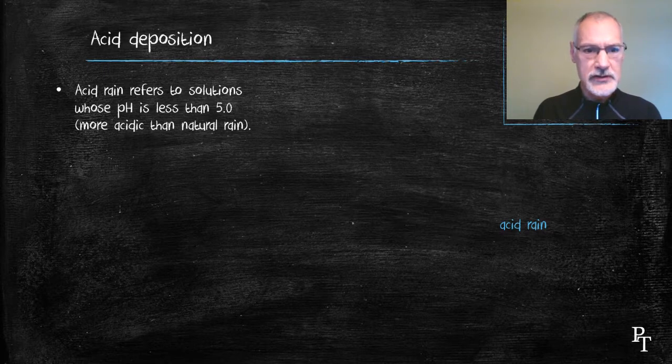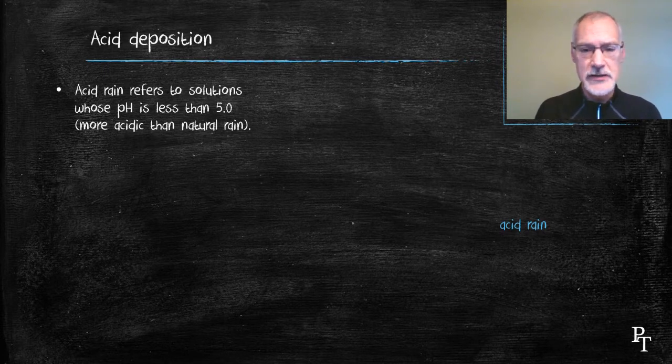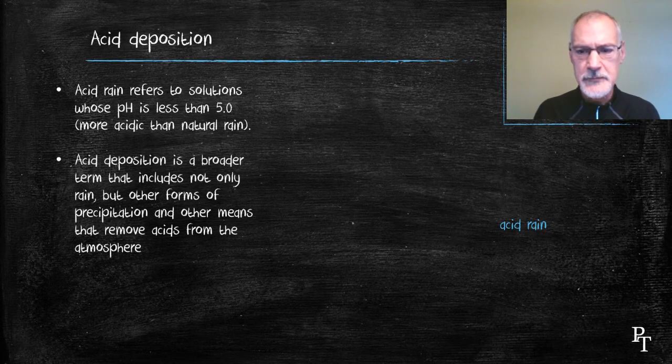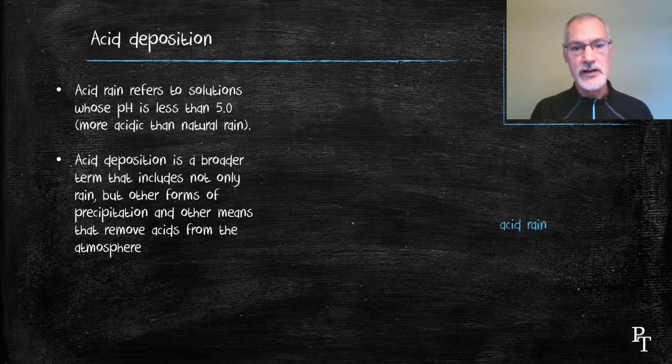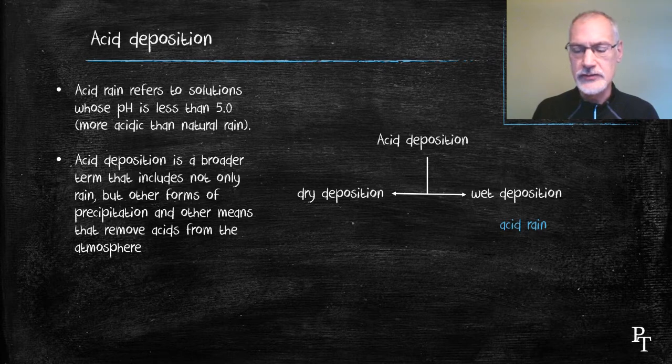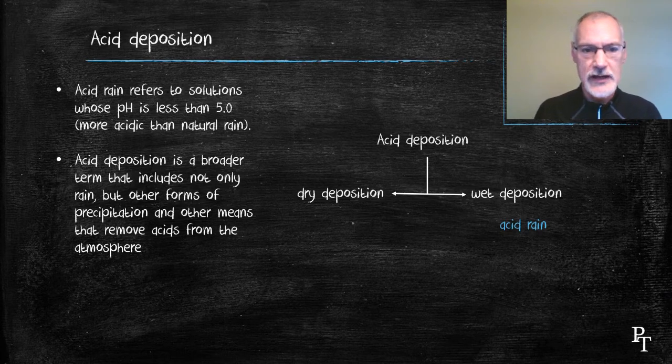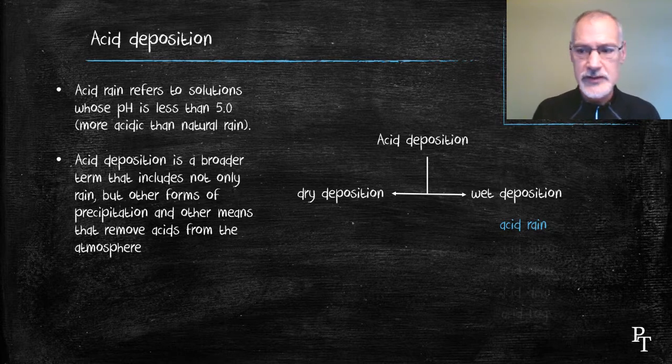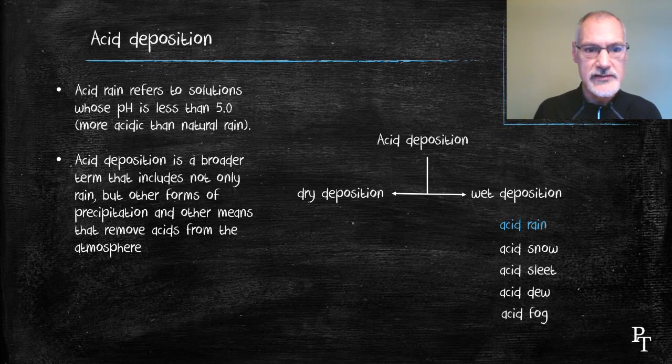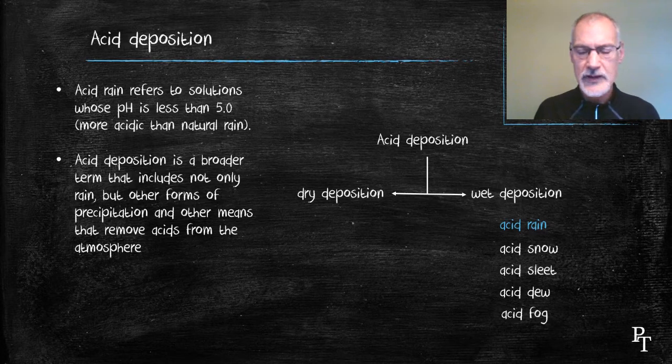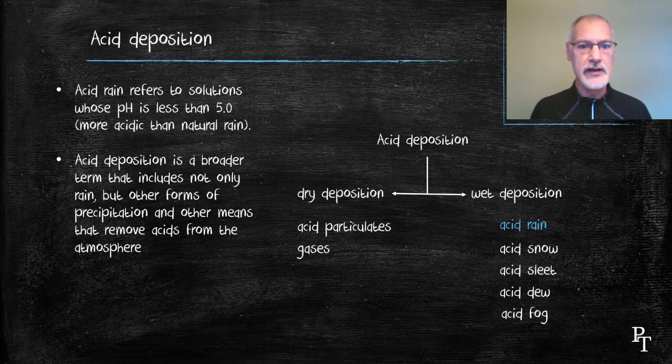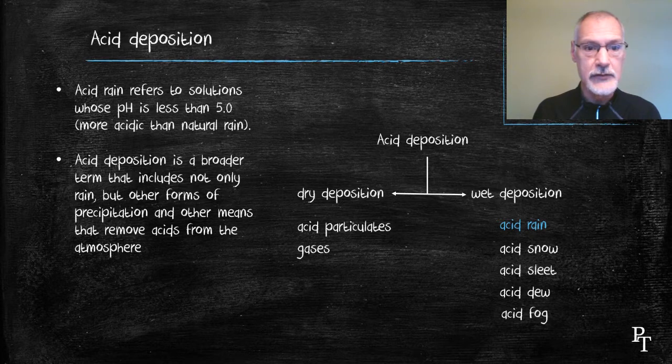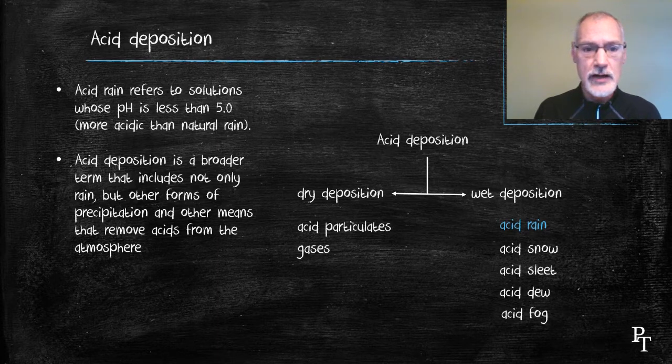But acid rain was the first acidified deposition to be studied. It's now become much broader than just acid rain. We now use the word acid deposition. Acid deposition can come in two forms: wet or dry deposition. Acid rain falls into the wet deposition category, but we can get other forms of precipitation that are also acidified, including snow, sleet, hail, drizzle, and fog. We can also get acidification through dry deposition - acid particles adhering to smoke or dust. The gases themselves can be acidic in nature, not requiring the presence of rain to cause their damage.